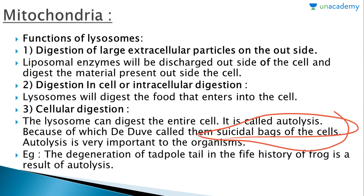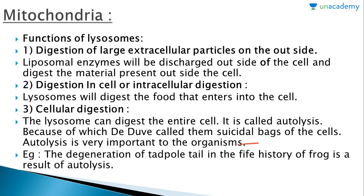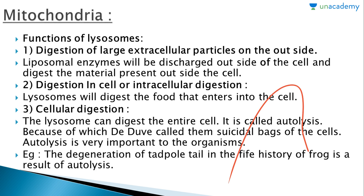Autolysis is a very important feature performed through the lysosome. It helps in maintaining the constant number of cells at a particular tissue and also helps in the removal of unnecessary cells. An example is the degeneration of the tadpole tail in the life history of the frog, which is a result of autolysis. Through this destruction, the tadpole larva is converted into an adult frog.